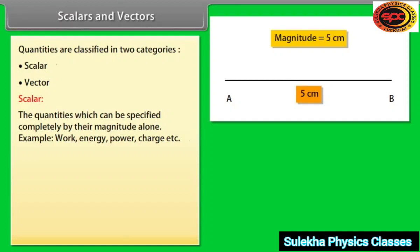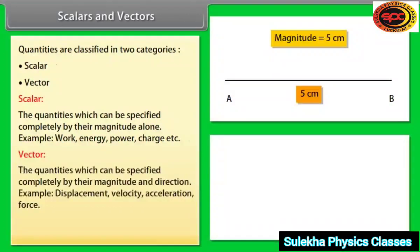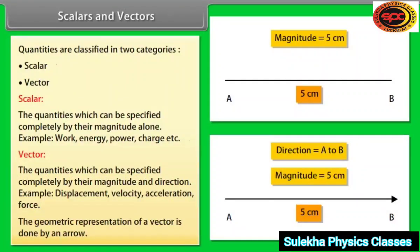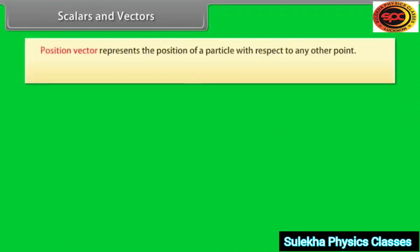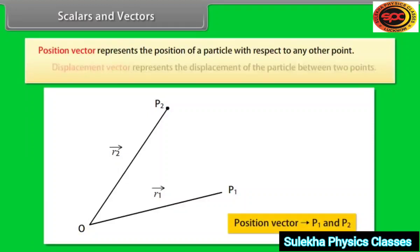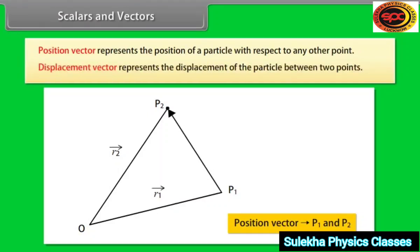Vector: the quantities which can be specified completely by their magnitude and direction. For example, displacement, velocity, acceleration, force. The geometric representation of a vector is done by an arrow. Position vector represents the position of a particle with respect to any other point. Displacement vector represents the displacement of the particle between two points.